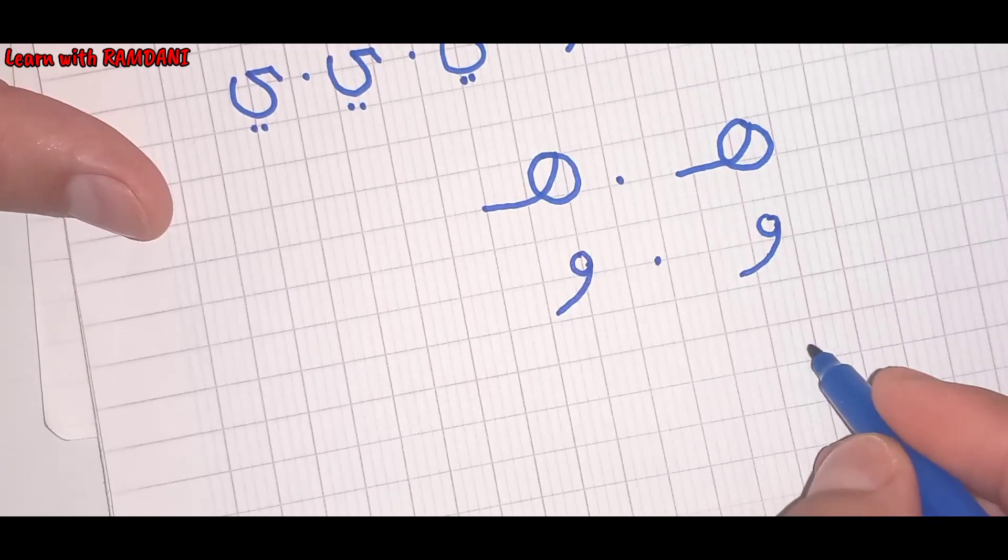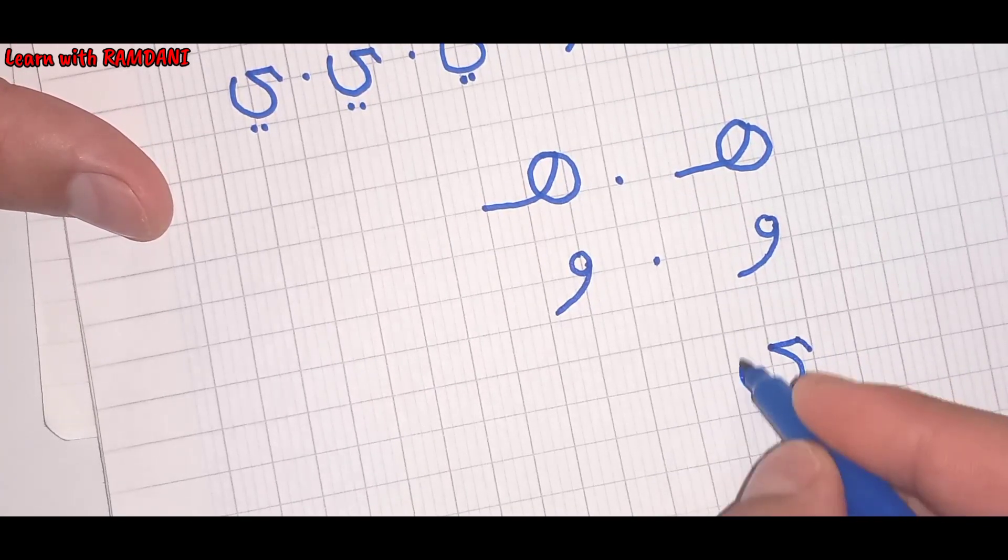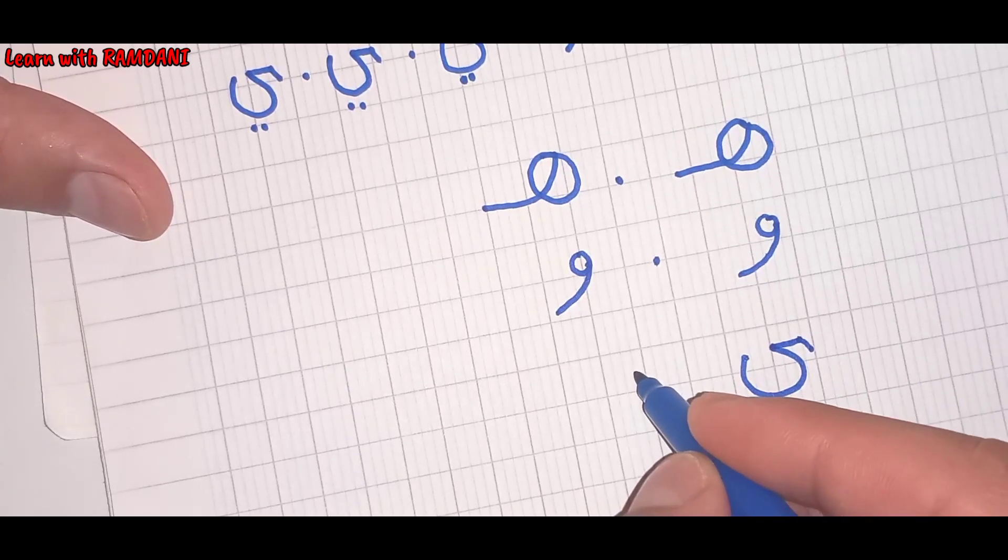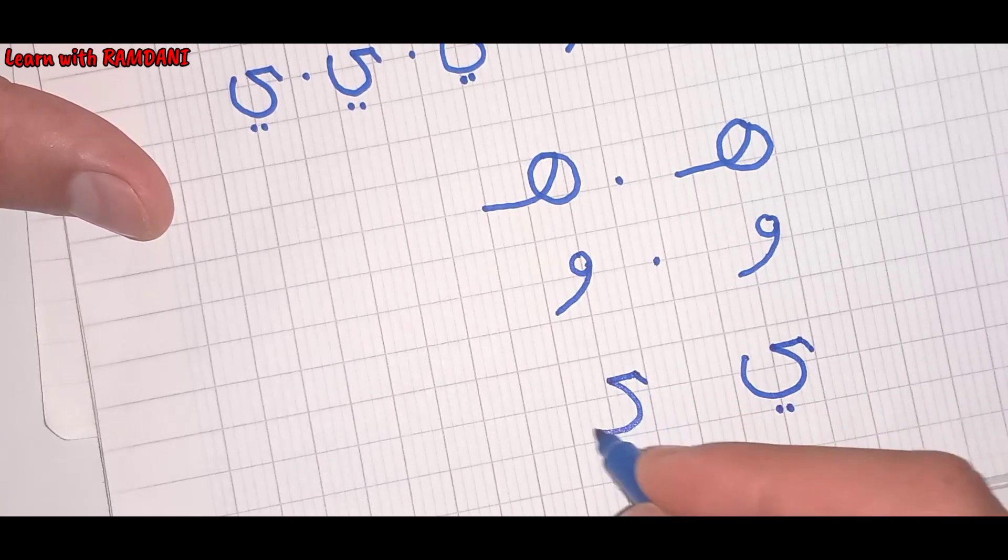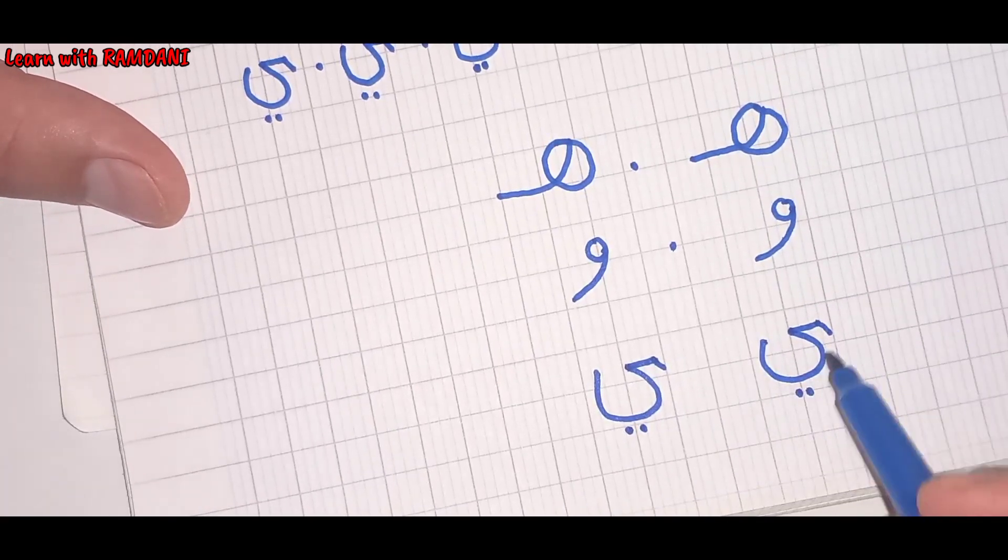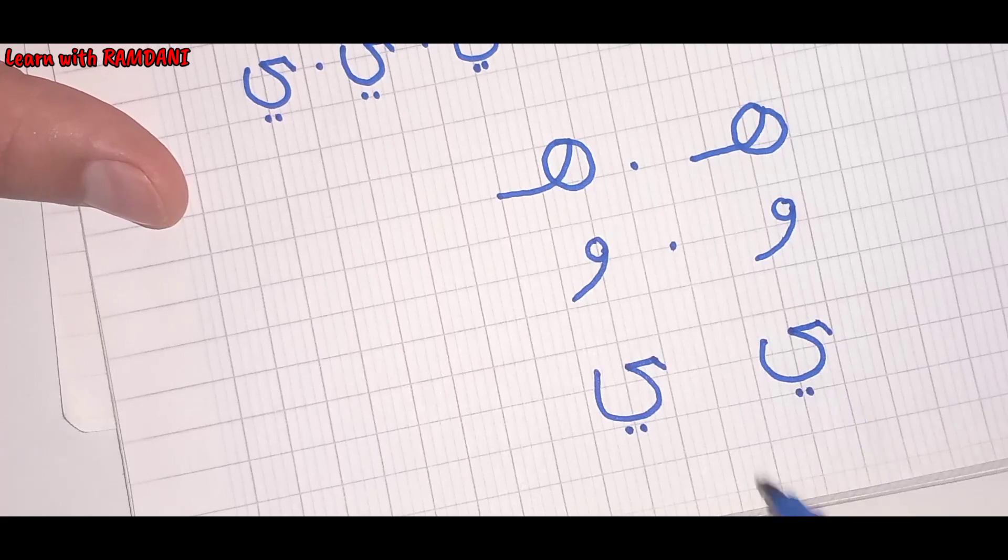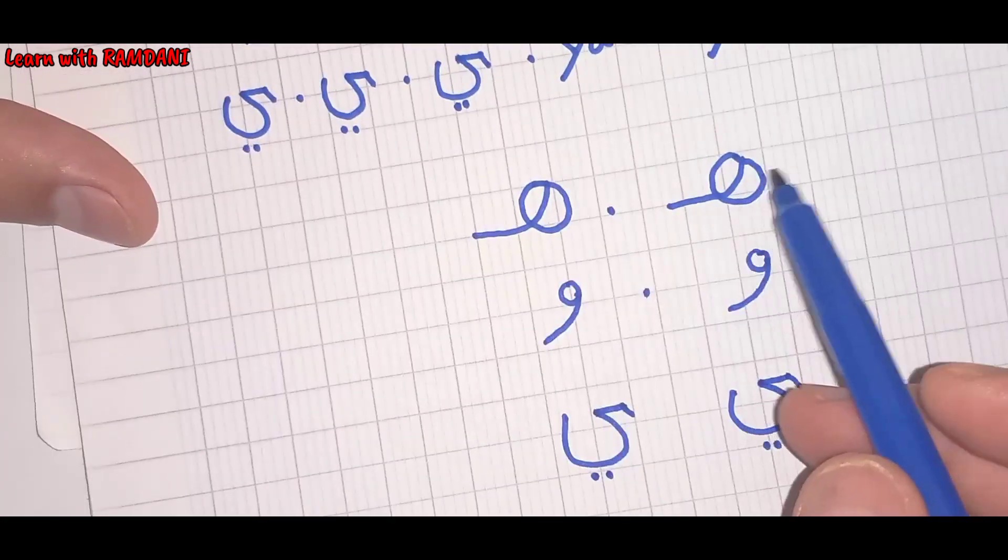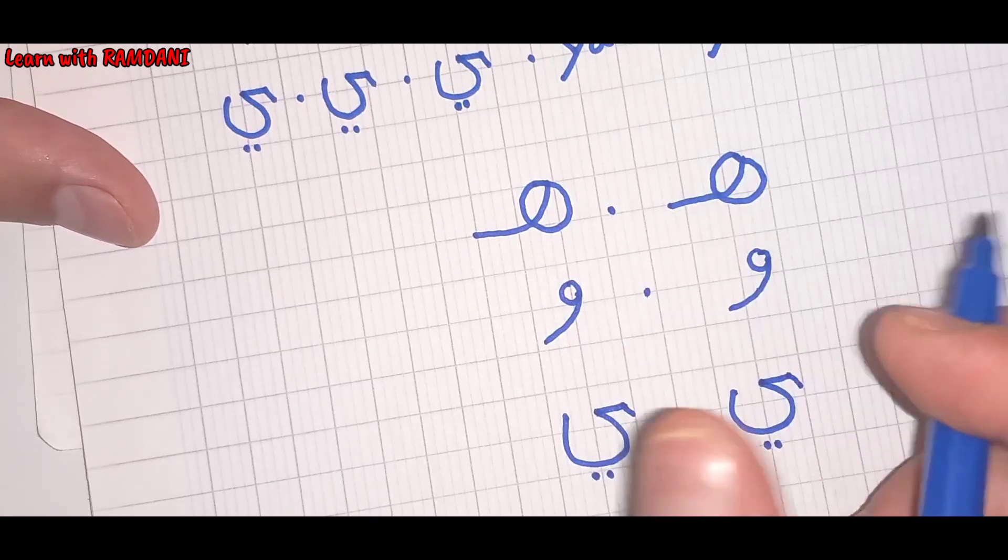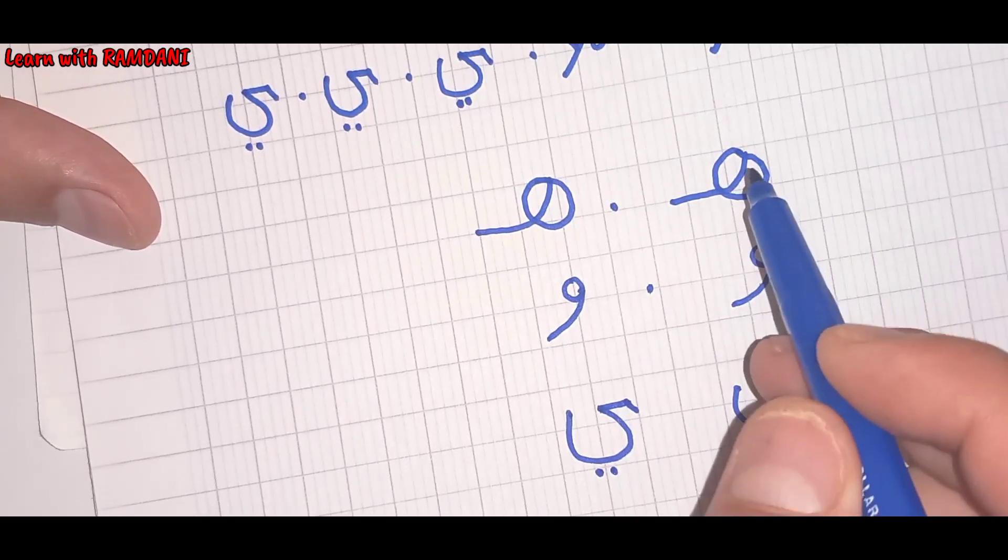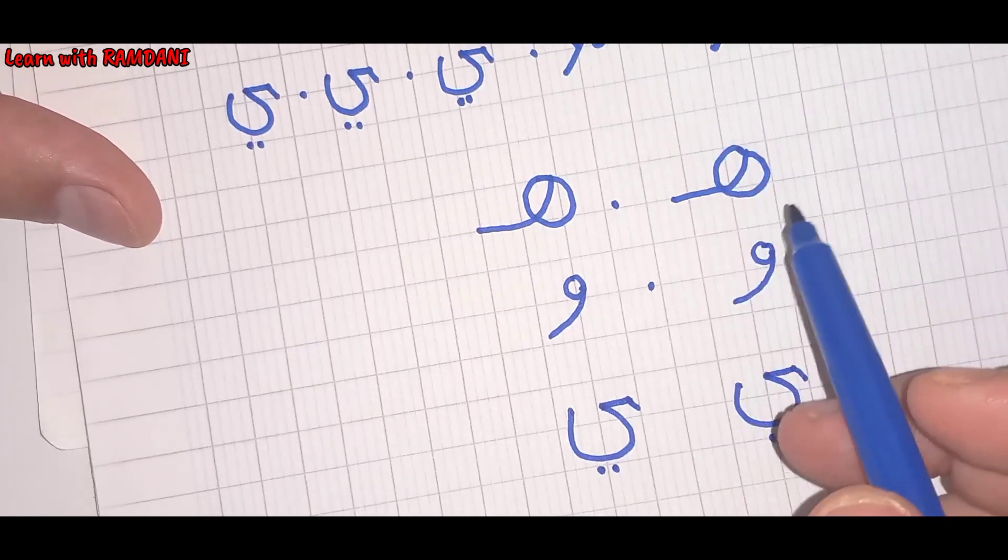Come here, like this and down and the two dots. One more time, like this and down and with two dots. Ya with two dots. Ha, ha, not Ha. There is Ha and Ha, but this is Ha, not Ha. Ha, ha.